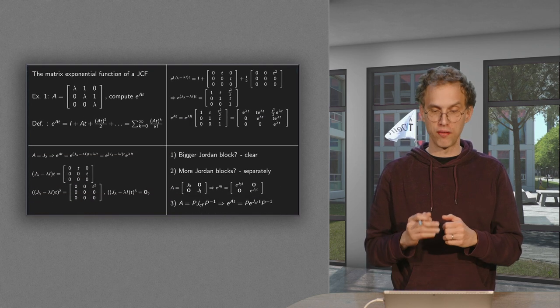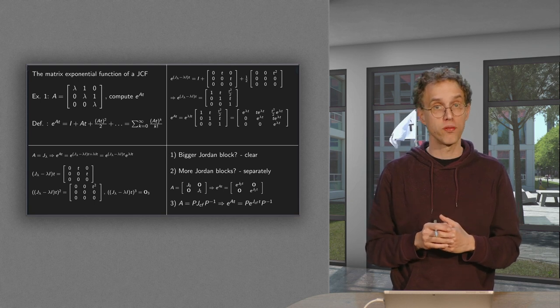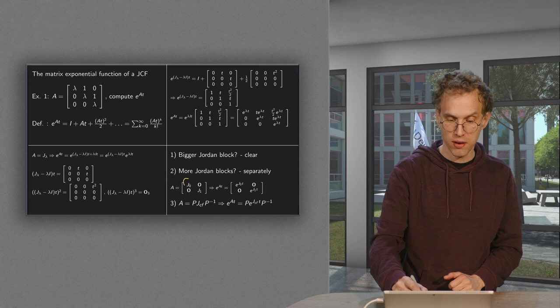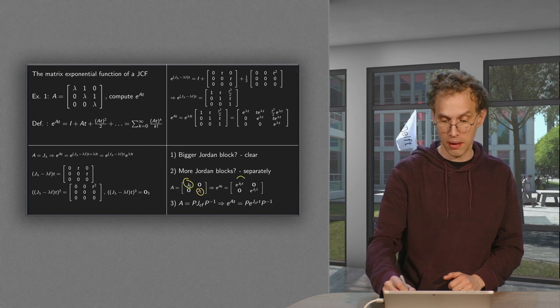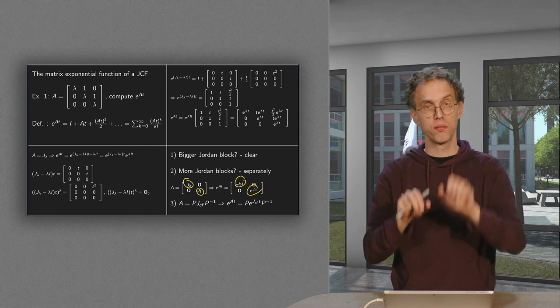So what if you have bigger Jordan blocks? We discussed it, that's clear. What if you have more than one Jordan block? That's also easy. If you have two, you can do them separately. And e to the power At gives you just the exponents of the two separate blocks.